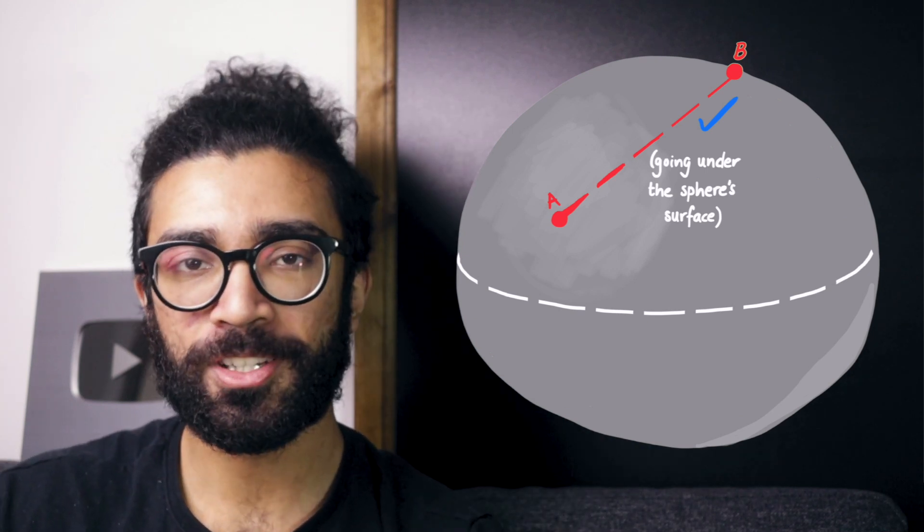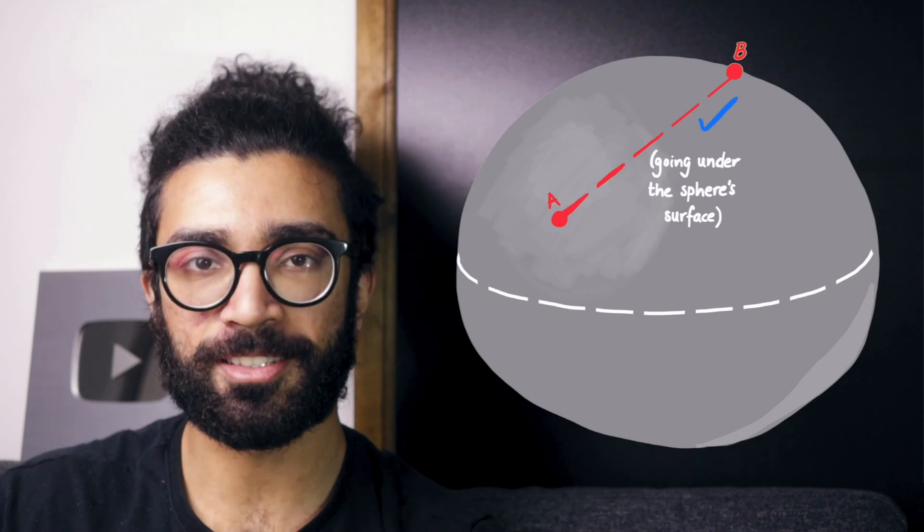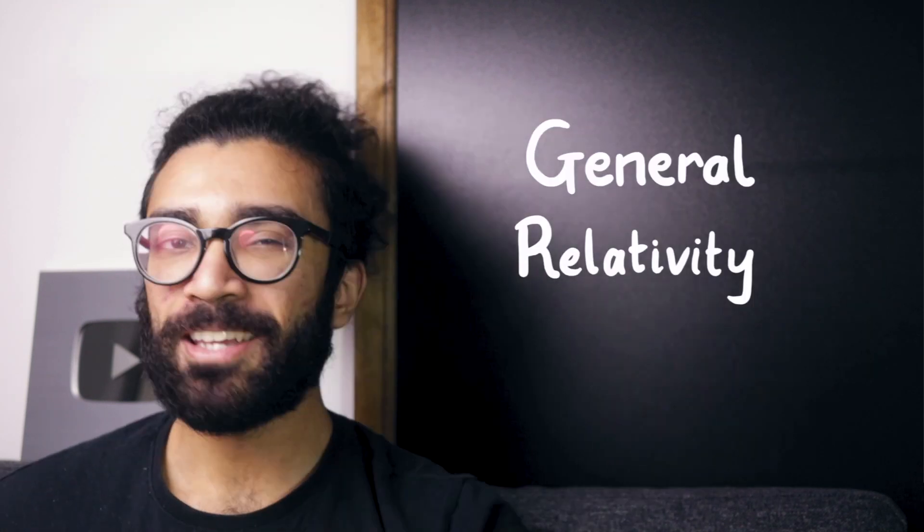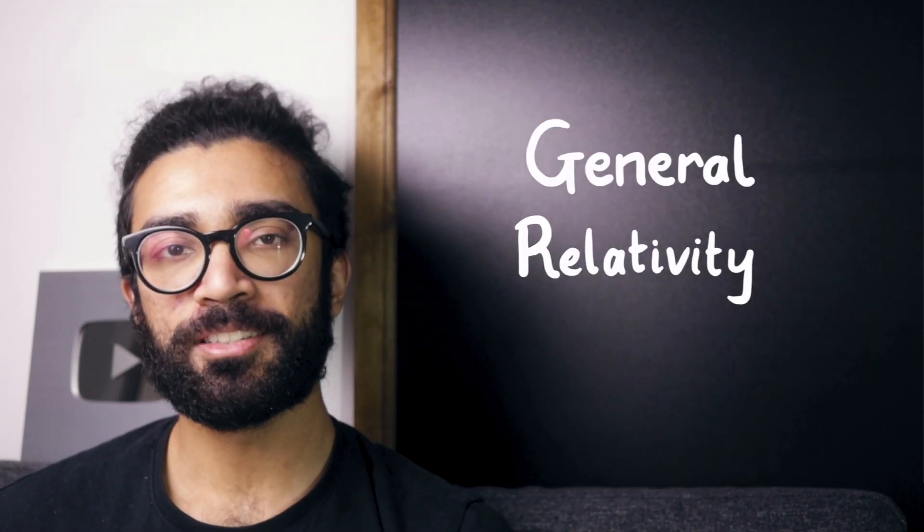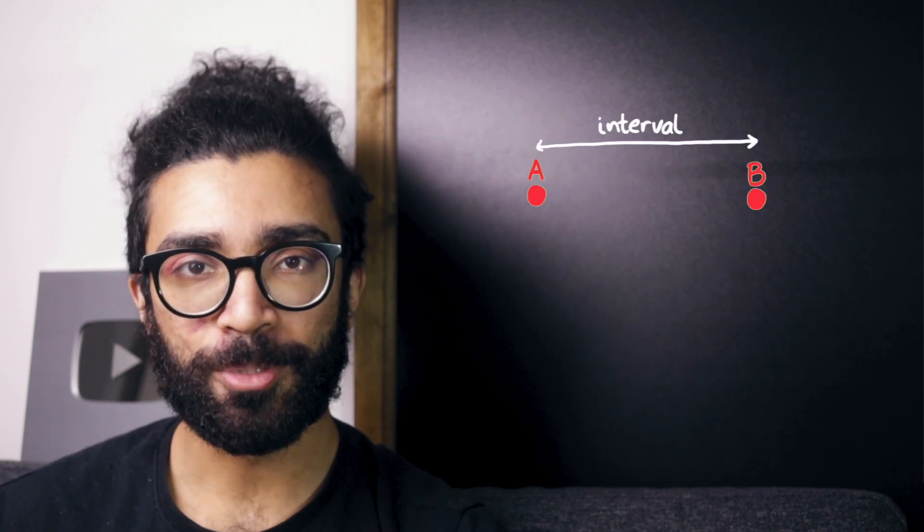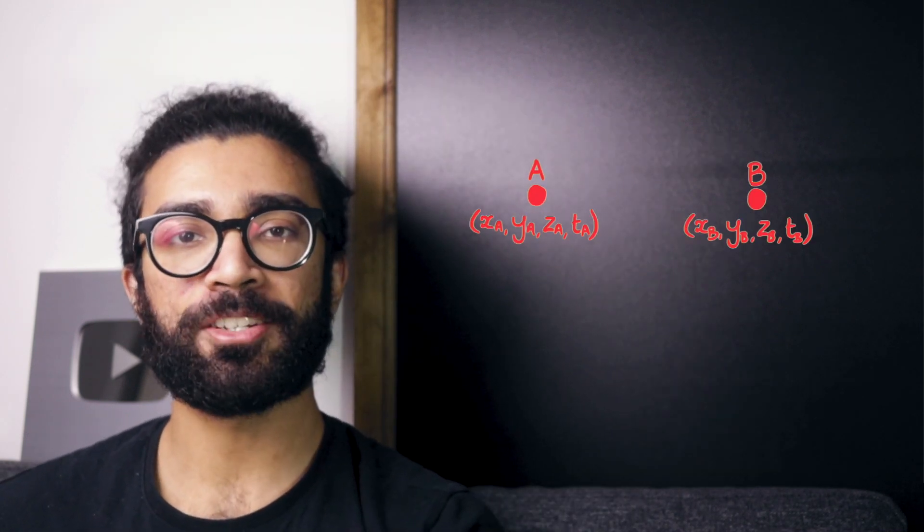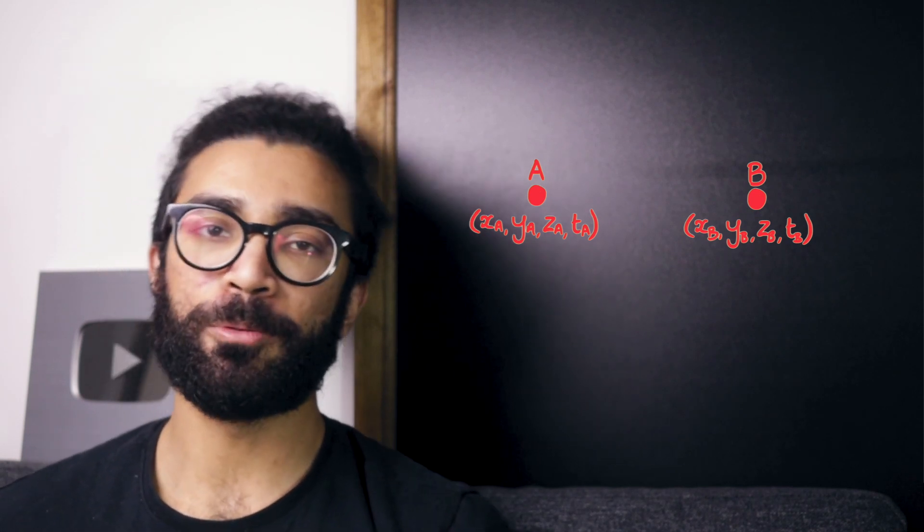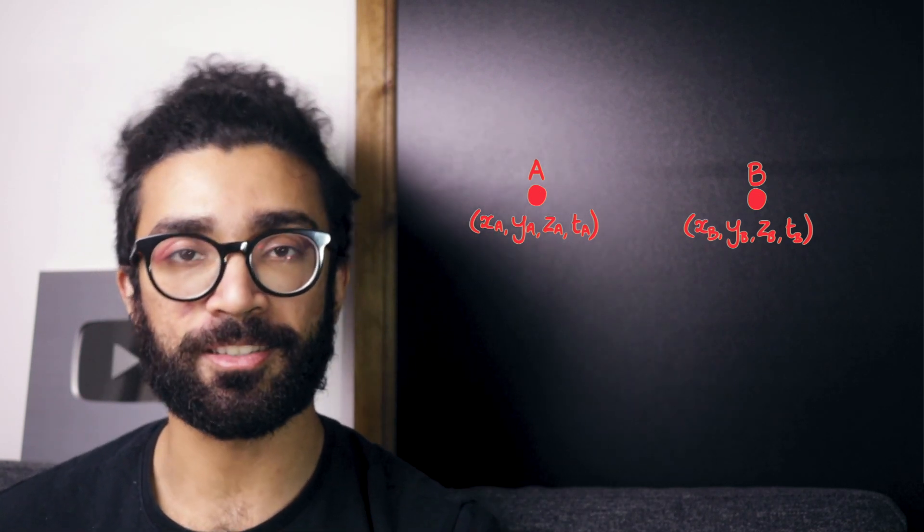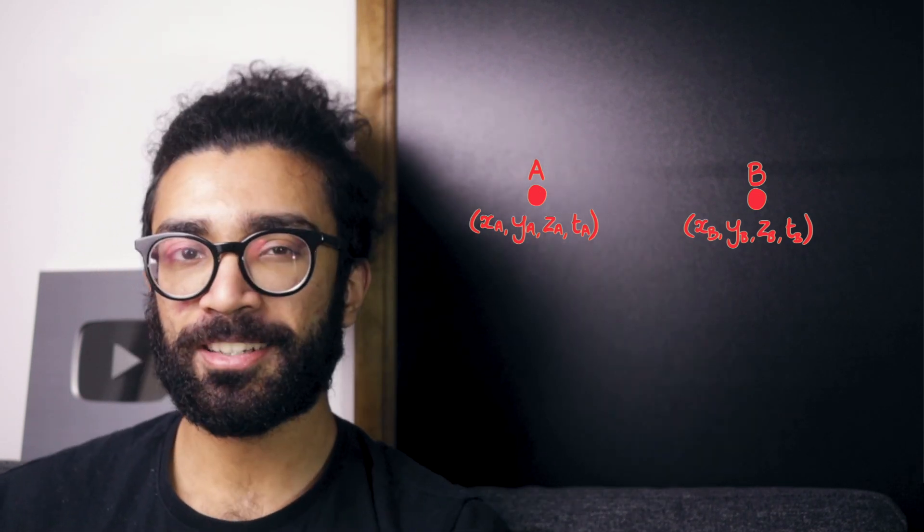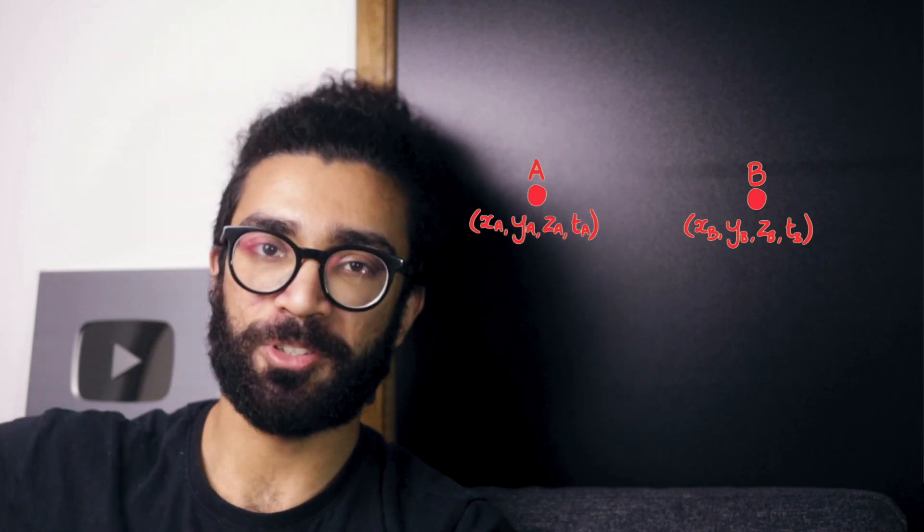This kind of logic unfortunately breaks down a little bit when we start studying general relativity. Now in the study of relativity, we often consider what is known as the shortest interval between two events. This is essentially just a four-dimensional space-time version of what we were just talking about, the shortest distance between two points. The logic is essentially the same, just extended up to four dimensions.